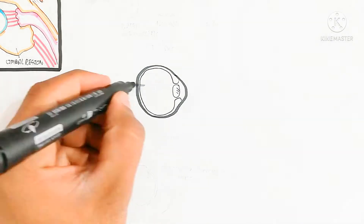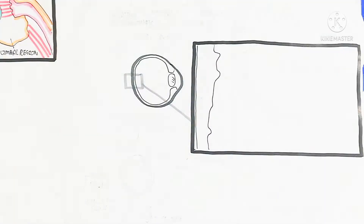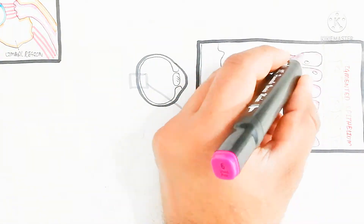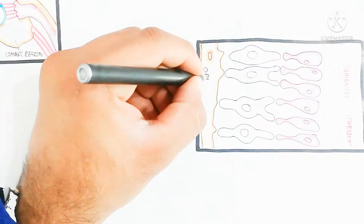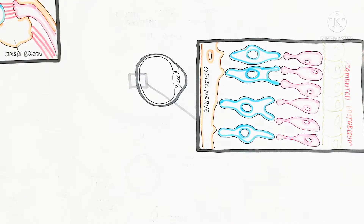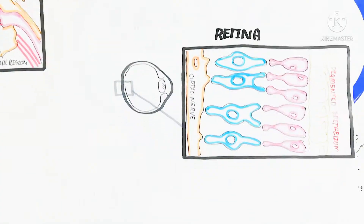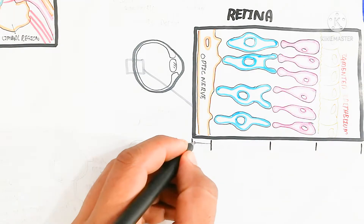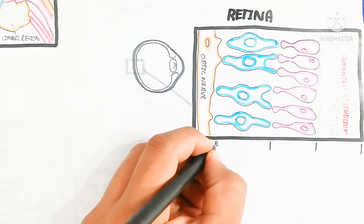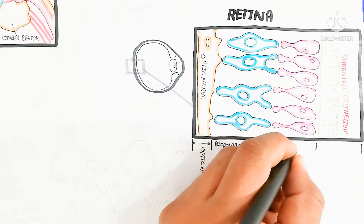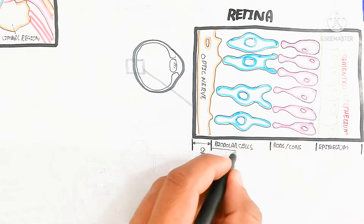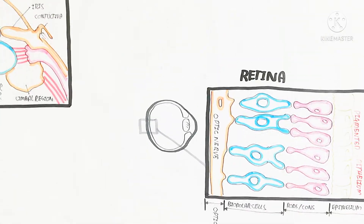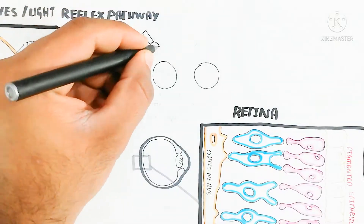We should also understand the retina. The retina contains layers: the pigmented epithelium, which absorbs color, and the rod and cone cells. Bipolar cells transmit signals from the rod and cone cells toward the optic nerve for processing in the occipital lobe of the brain. The optic nerve receives the light signal — this is known as phototransduction or light transduction. The bipolar cells, rods, cones, and epithelium all play important roles in phototransduction.